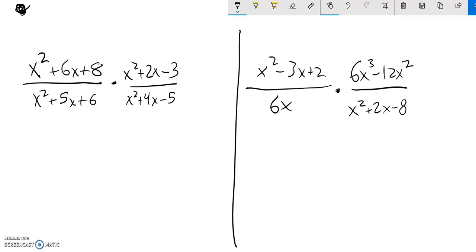Notice I have this multiplied by that. When I multiply fractions, it's just numerator times numerator over denominator times denominator. You can think of this as one big fraction. I'm going to factor everything and see what cancels out.